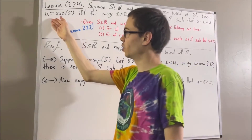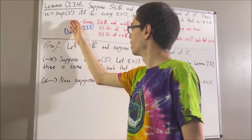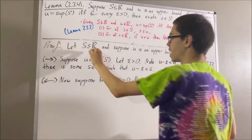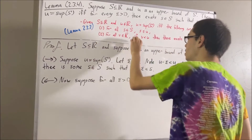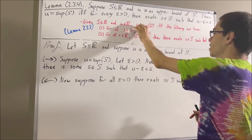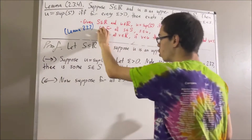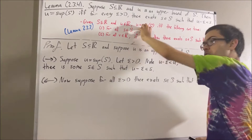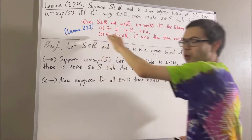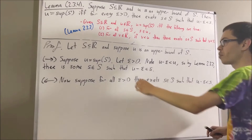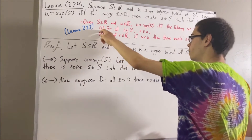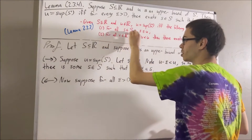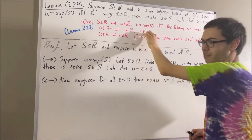Our whole goal in this step is to prove that u is the supremum of S. To do so, we're going to apply lemma 2.3.3. We have that S is a subset of real numbers and u is a real number, so u is the supremum of S if and only if conditions 1 and 2 hold. Let's start by proving condition 1. Since u is an upper bound of S, condition 1 automatically holds, because that is the definition of an upper bound of S.